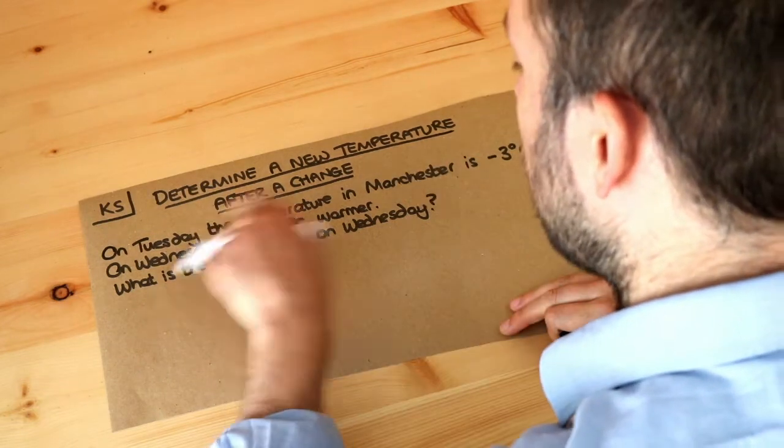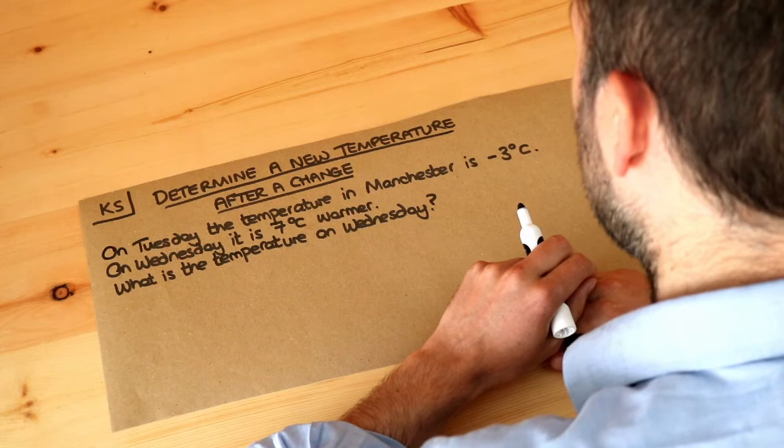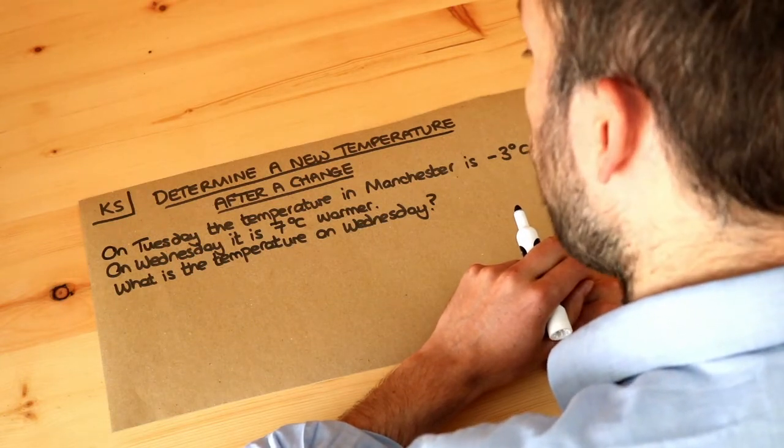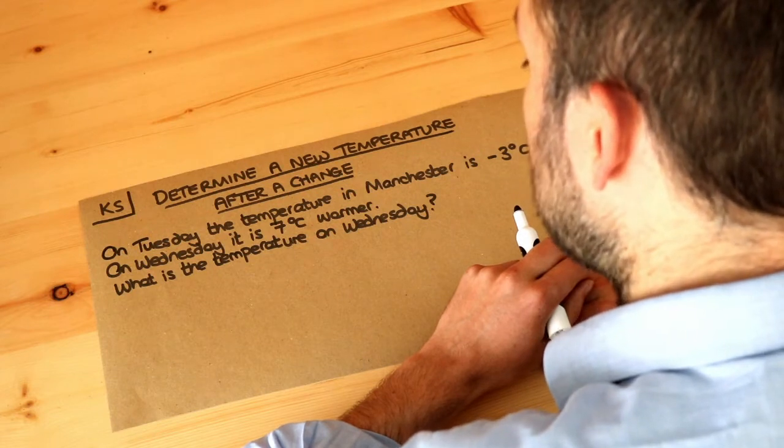Here's the question: on Tuesday the temperature in Manchester is minus three Celsius, on Wednesday it is seven degrees warmer. What is the temperature on Wednesday?